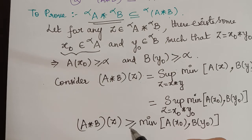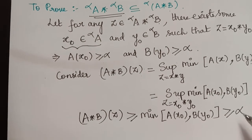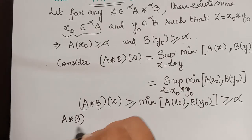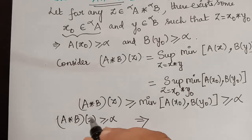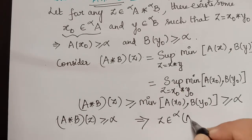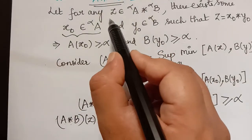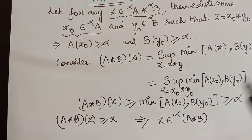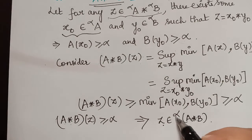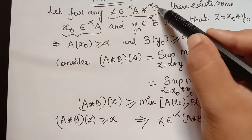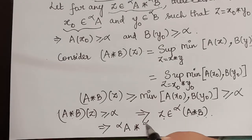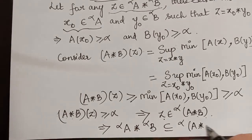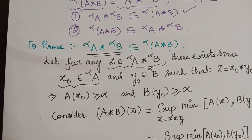From this we observe that A★B(z) ≥ α, meaning the membership grade of z with respect to the fuzzy set A★B is greater than or equal to α, which implies z is an element of the alpha-cut of A★B. We started with an element from the alpha-cut of A starred with the alpha-cut of B and proved it also belongs to the alpha-cut of A★B. Therefore, the alpha-cut of A starred with the alpha-cut of B is a subset of the alpha-cut of A★B.